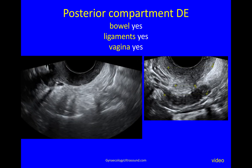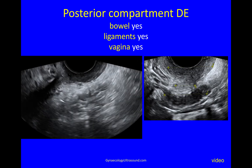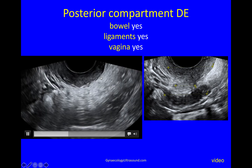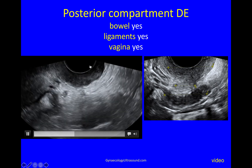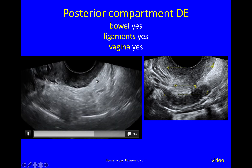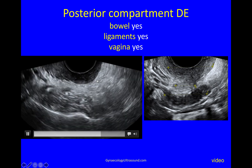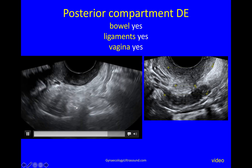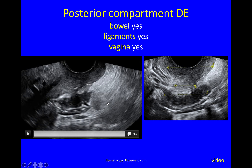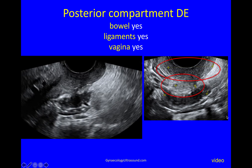It's important to note if all layers are affected. In this example, you can see that there's posterior fornix involvement, the ligaments are thick and fibrotic with deep endometriosis, and the bowel is involved as well. So this is very important where you've got vaginal involvement, ligaments, and bowel.